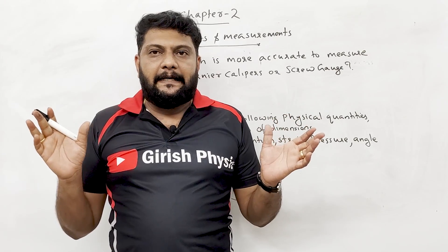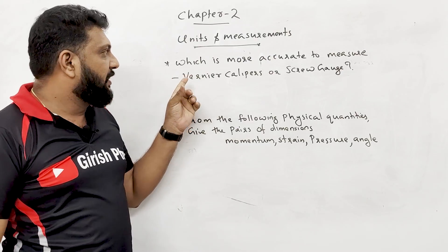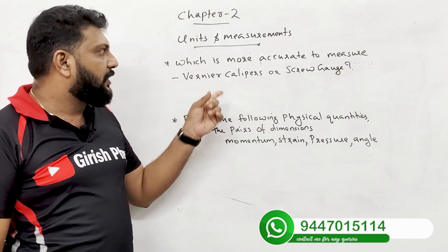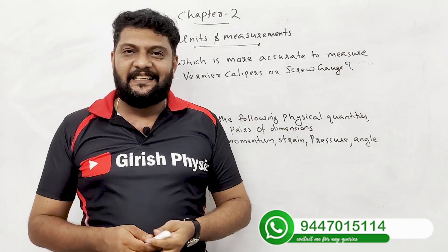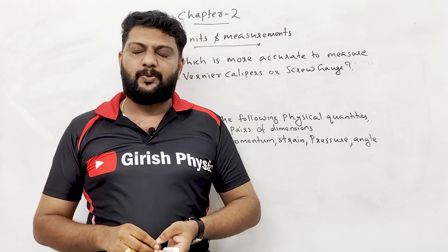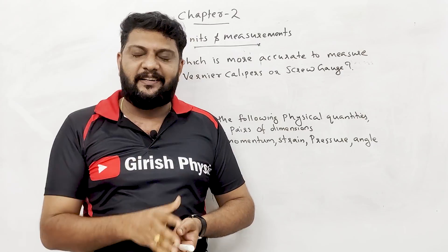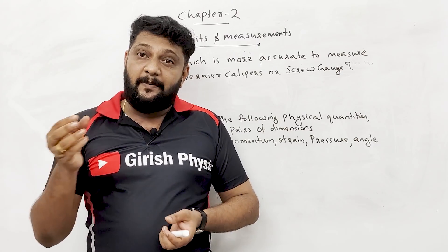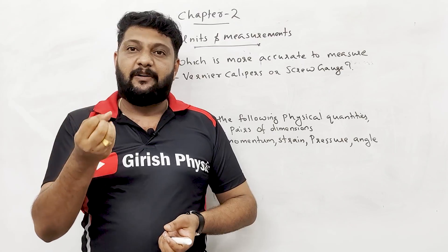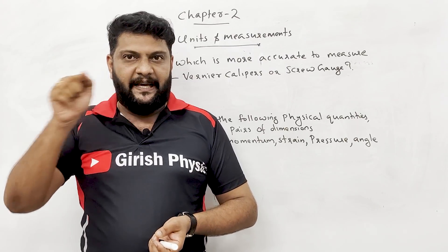Question: Which is more accurate to measure — Vernier Calipers or Screw Gauge? Vernier Calipers is used for measuring cylinders and spheres; Screw Gauge is used for thin wire and glass plates.